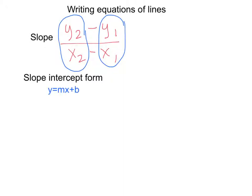The next form we're going to look at is slope-intercept form. We've already used this to graph, and keep in mind mathematicians aren't creative, so whatever it's called, that's what you get. We already know m stands for the slope, and b stands for your y-intercept. So if you're ever given a y-intercept, it goes right in place of the b, and a given slope goes where m is.